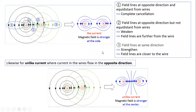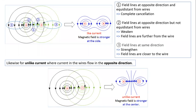When two wires carry current in opposite directions, they repel each other. As shown in the diagram, the first wire carries current out of the plane and the second carries current into the plane. The first wire has an anticlockwise magnetic field and the second has a clockwise magnetic field. Between the two wires the direction of the magnetic field is the same, so there is no interaction — and without interaction, the two wires strongly repel each other.